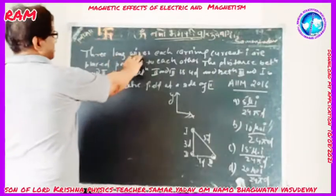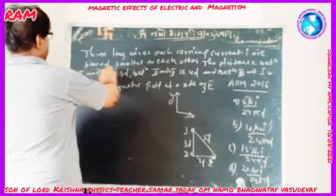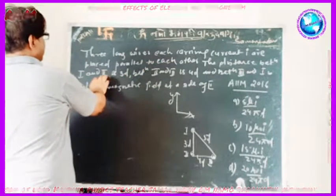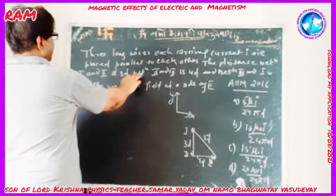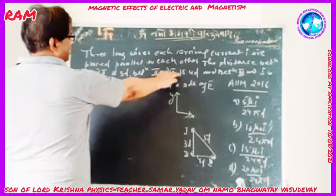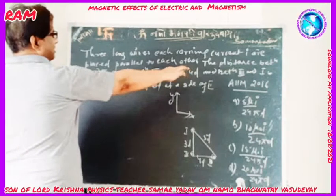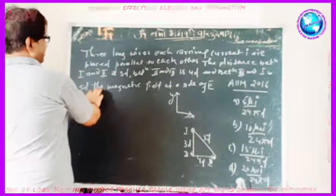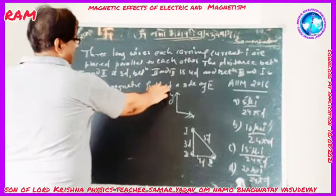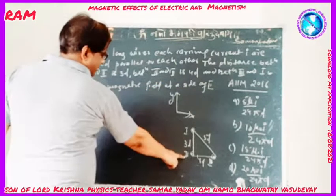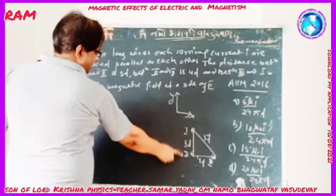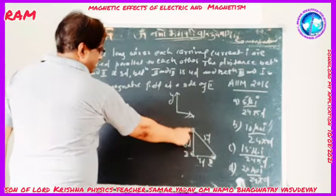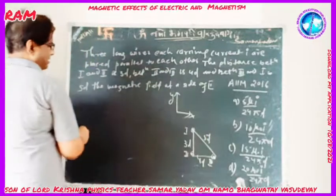Three long wires, each carrying current I, are placed parallel to each other. The distance between the first and second wire is 3D, the distance between the second and third wire is 4D, and the distance between the third and first wire is 5D.